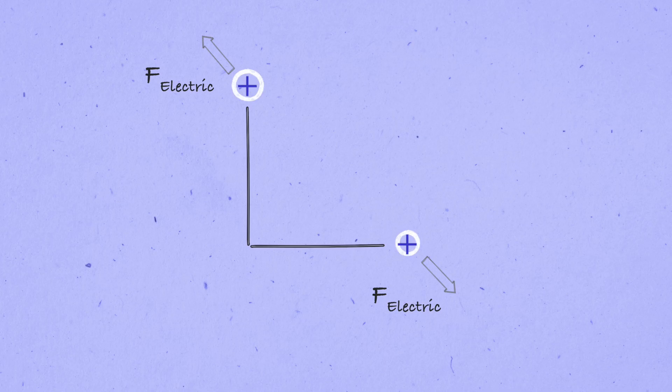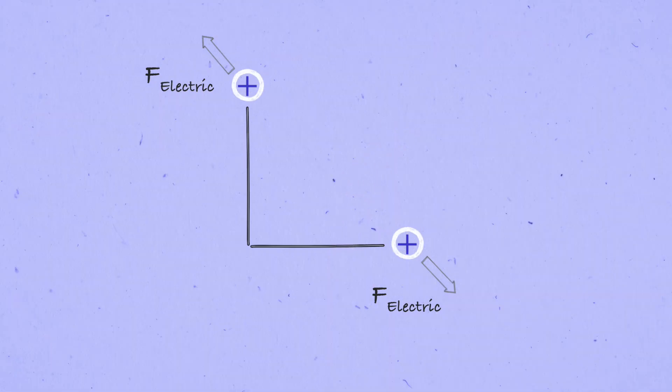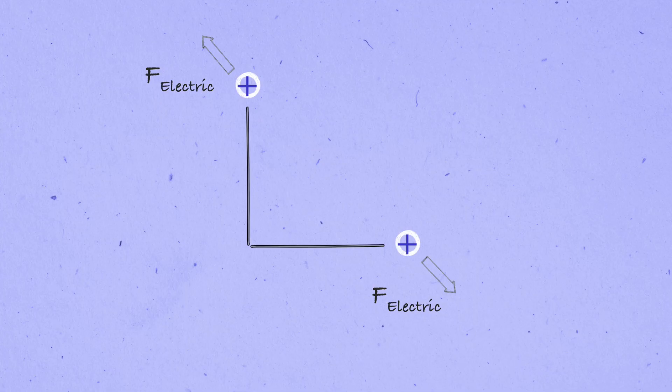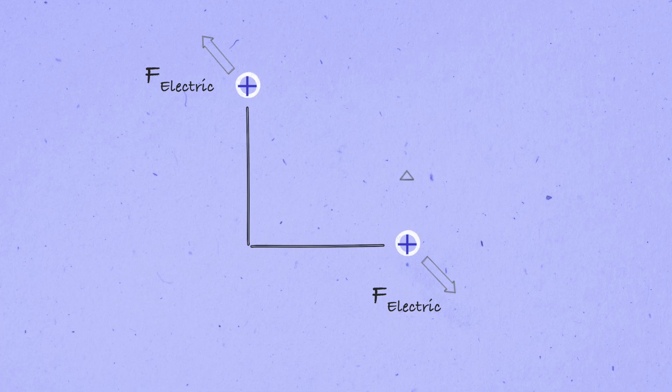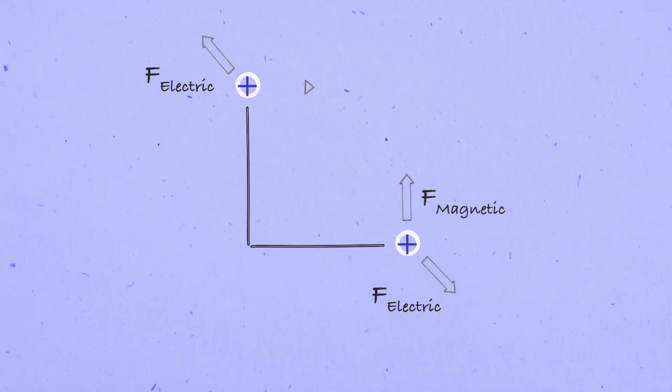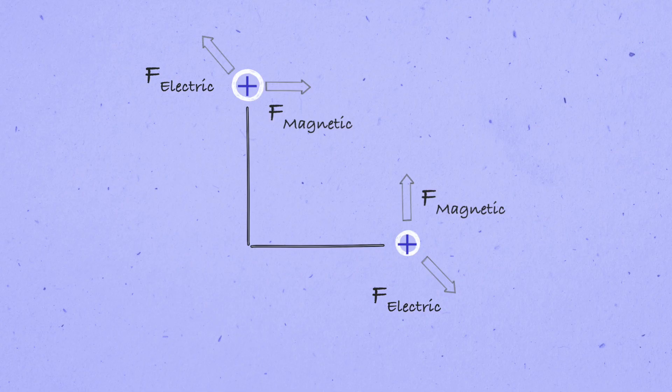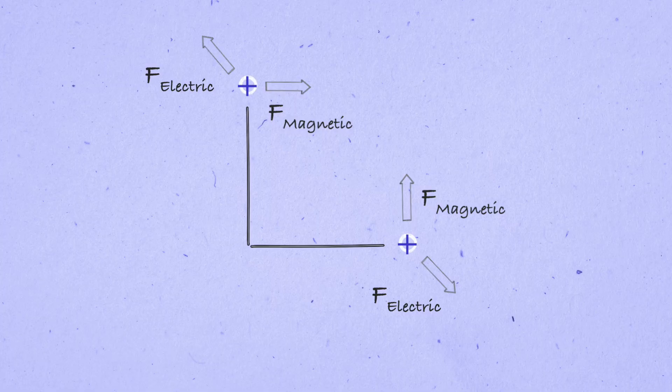Because they're moving, each charge also creates a magnetic field that circles around it and that exerts a magnetic force on the other particle. The particle on the x-axis experiences a magnetic force that points up, while the particle on the y-axis experiences a magnetic force to the right. They don't point in opposite directions, and Newton's third law is therefore violated.